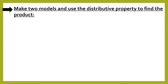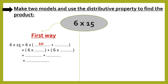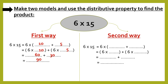Another example: make two models and use the distributive property to find the product. 6 times 15. First way: break 15 into 10 plus 5. So 6 times 10 plus 6 times 5 equals 60 plus 30 equals 90. Second way: distribute 15 into 7 and 8. So 6 times 7 plus 6 times 8 equals 42 plus 48 equals 90.